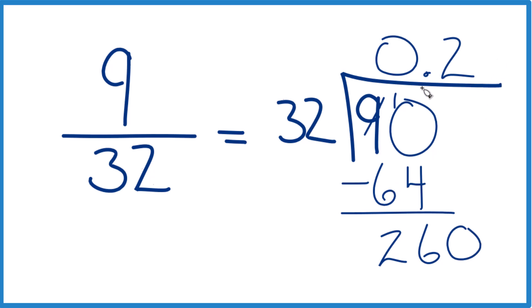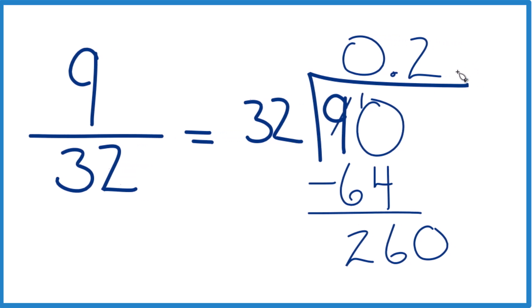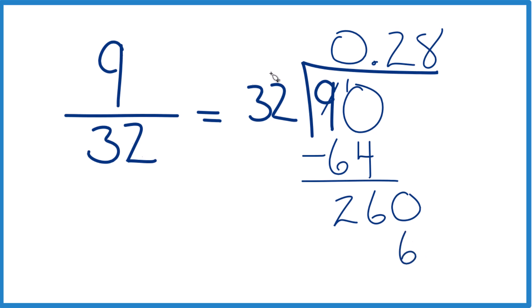So 8 might work. 8 times 30 is 240. Let's try 8. So 8 times 2, 16. 8 times 3, 24, plus 1 is 25. So that works out pretty good. Subtract, and we just get 4.